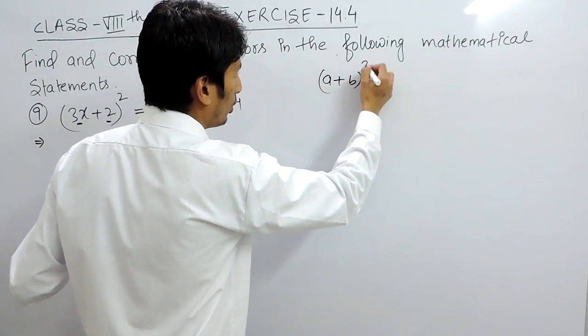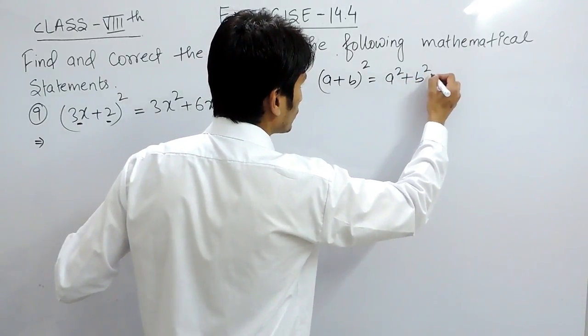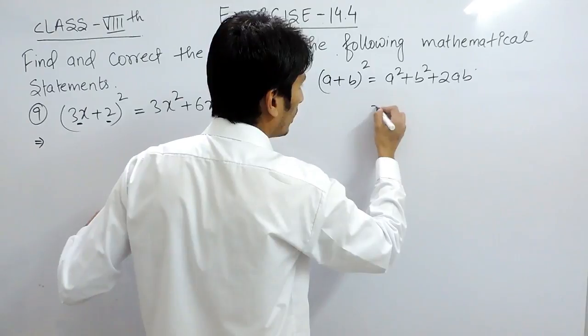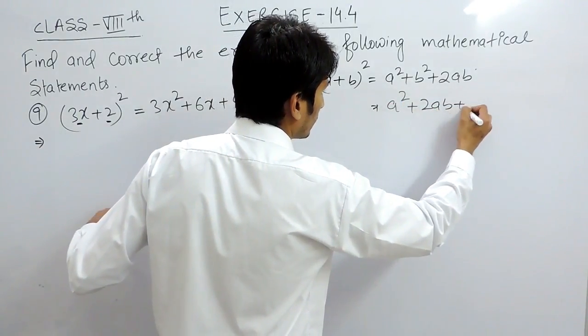The formula says (a+b) whole square is basically equals to a² plus b² plus 2ab, or in some cases it is written differently. Both cases are the same.